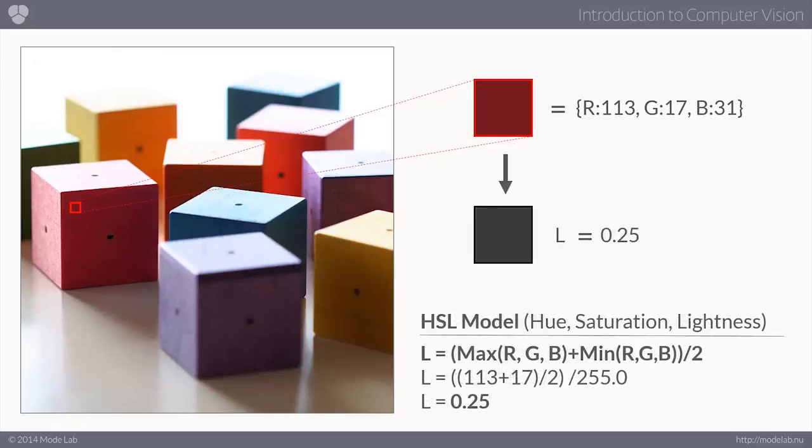There are other types of models though. We have another model called hue, saturation, and lightness. And to solve for the lightness, basically convert from RGB space to HSL space, the algorithm is going to be the average of the maximum RGB value plus the minimum RGB value. So in this case, we're going to take whatever our maximum value is, 113.